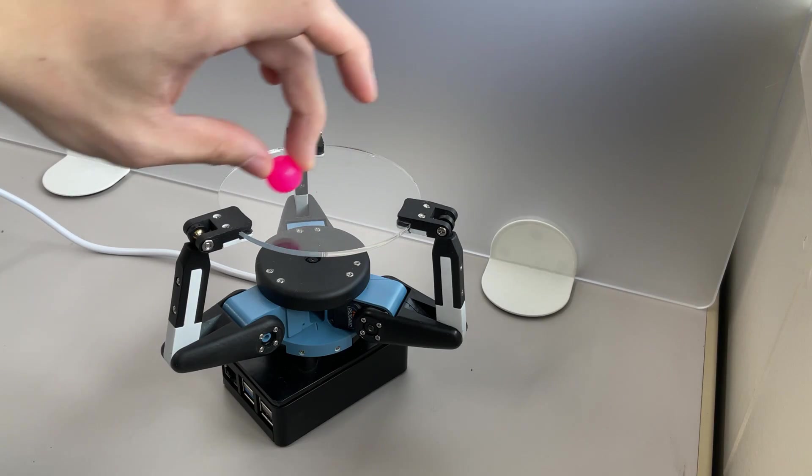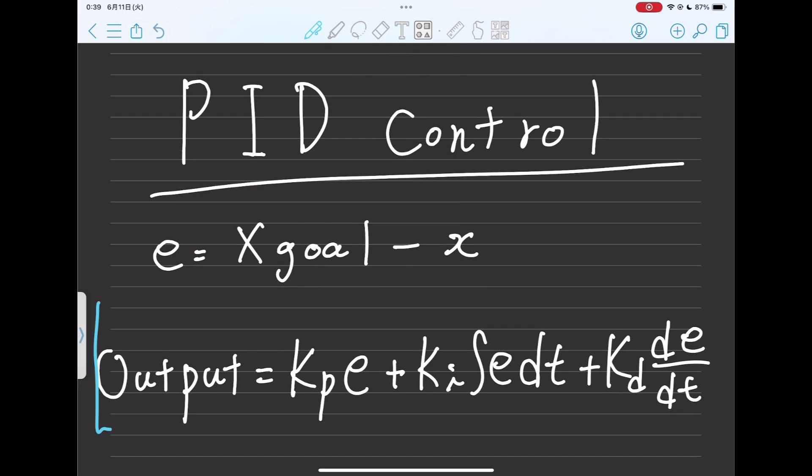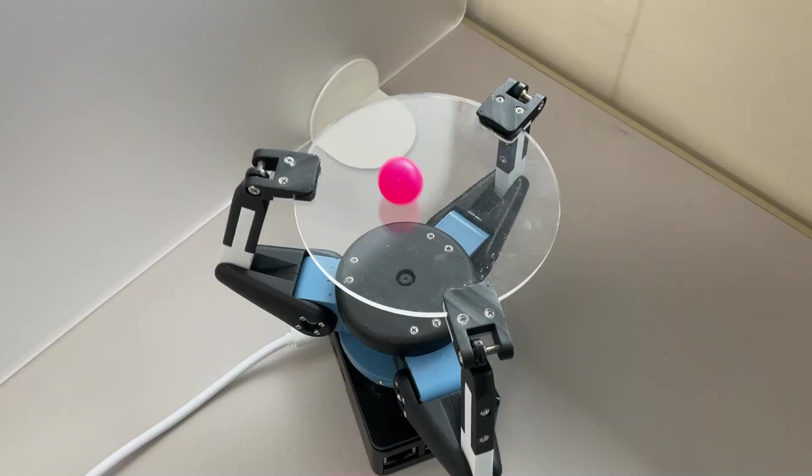The next challenge is to move the ball freely on the platform. Sounds difficult? Actually, it is not that difficult. Since the algorithm to move the ball to the target coordinates is already completed, all you have to do is change the target position to the desired location. For example, move it in a straight line.